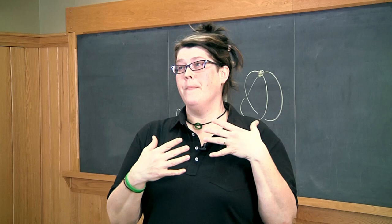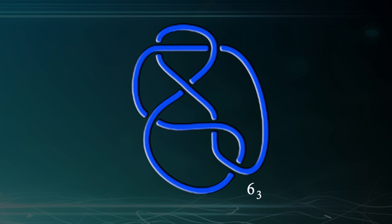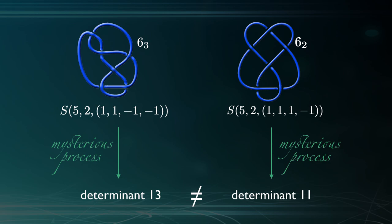You might associate a number to each knot. So you take knot 62, which you see on the board, the bold one there, and another knot, 63, the next one in the knot table, and you do some mysterious process that allows you to assign a number to each of those knots. That number is called the determinant.